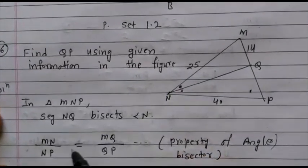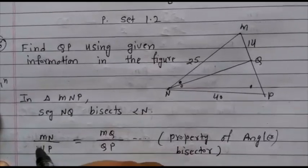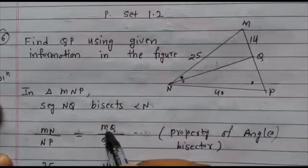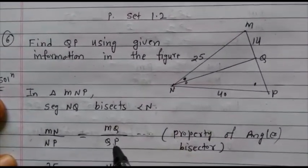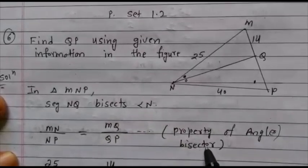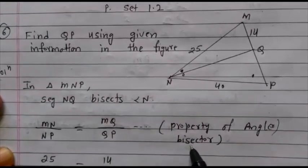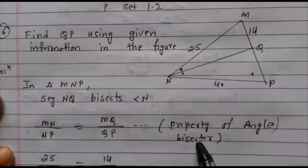Then, by the formula, what is the formula? MN upon NP is equal to MQ upon QP, by the property of an angle bisector. Write this reason.